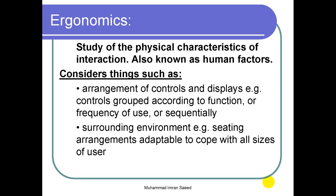Ergonomics is the study of the physical characteristics of interaction, also known as human factors. When I talk about physical characteristics — for example, how do I sit, how do I place my computer, how do I put my hands on the keyboard and mouse — all these factors are known as ergonomics. This field studies the physical characteristics and the environment in which we are working, including seating arrangement, heating, air conditioning, and colors.